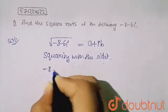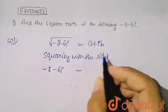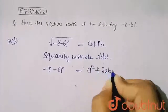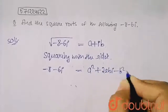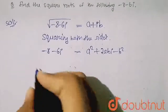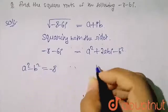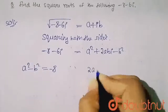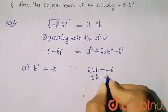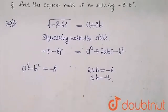So what I will get here? Minus 8 minus 6 iota will be equal to, squaring both sides, A squared plus 2AB iota minus B squared. So compare your real part and imaginary part. A squared minus B squared equals minus 8, and the imaginary part: 2AB equals minus 6. It means AB equals minus 3.